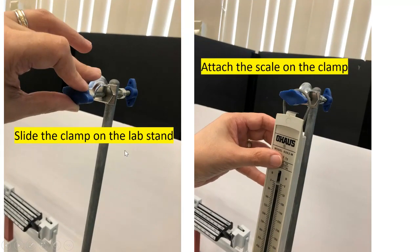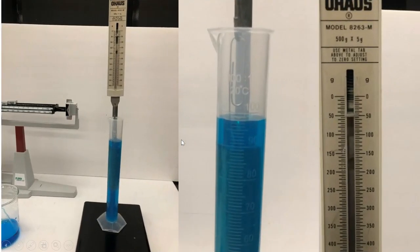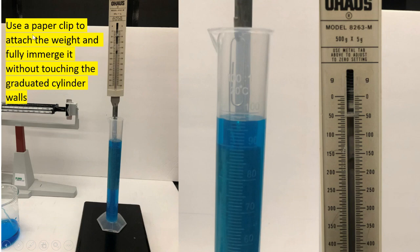Slide the clamp on the lab stand and attach the scale on the clamp. Use a paper clip to attach the weight and fully immerse without touching the graduated cylinder walls. So here is our final volume 98 ml.